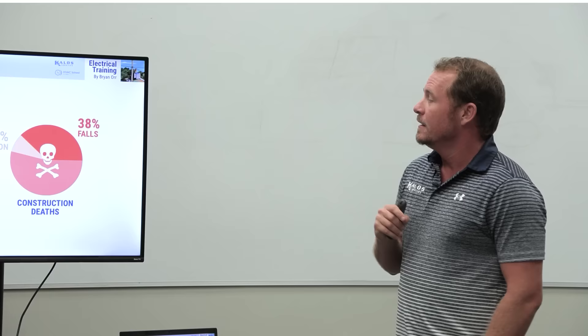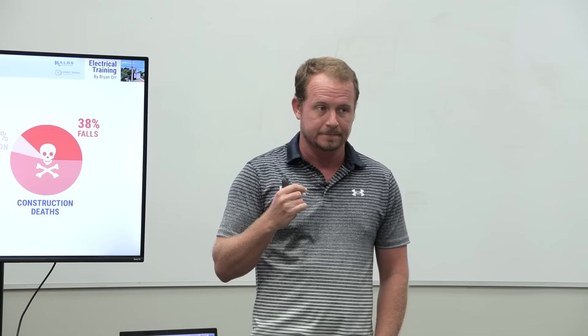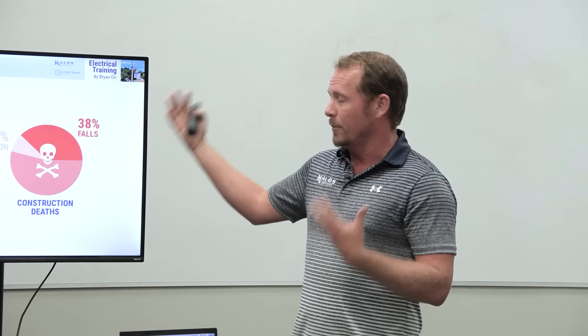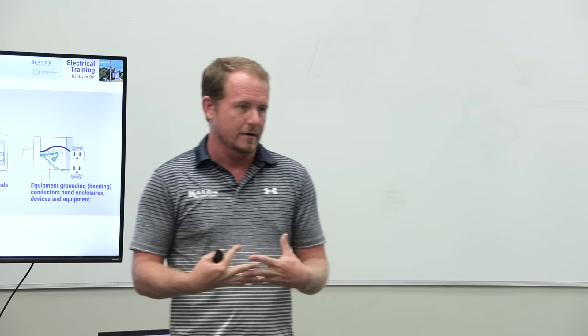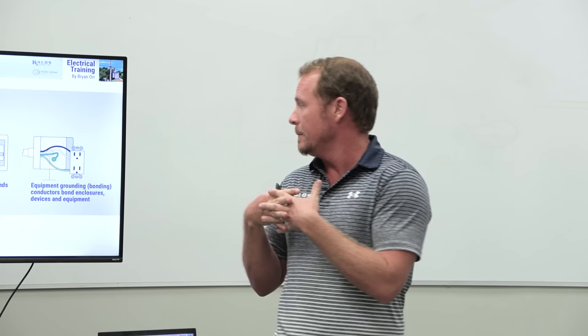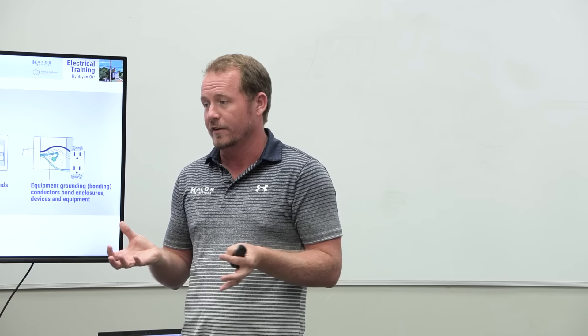Fall risks: a huge portion of deaths associated with electrical work are related to falls—much greater than direct electrocution. You get shocked and you fall back. So ladder safety and proper harnessing become really important when working on any electrical. Grounding and bonding: we need to connect all the metal electrical parts together when working in an electrical system. One reason for this, especially with pool equipment or salty environments, is to actually prevent corrosion—bonding things together prevents galvanic reactions that cause rust.